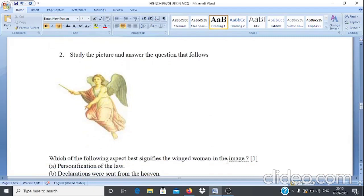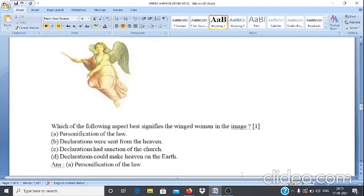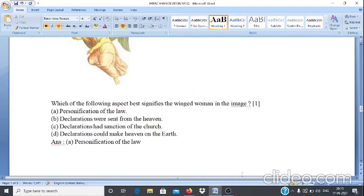Question 2. Now study the picture and answer the question that follows. After looking at the picture, the question is which of the following aspect best signifies the winged woman in the image? A: Personification of law, B: Declarations were sent from the heaven, C: Declarations had sanction of the church, D: Declarations could make heaven on earth. And answer is option A, that is personification of the law.